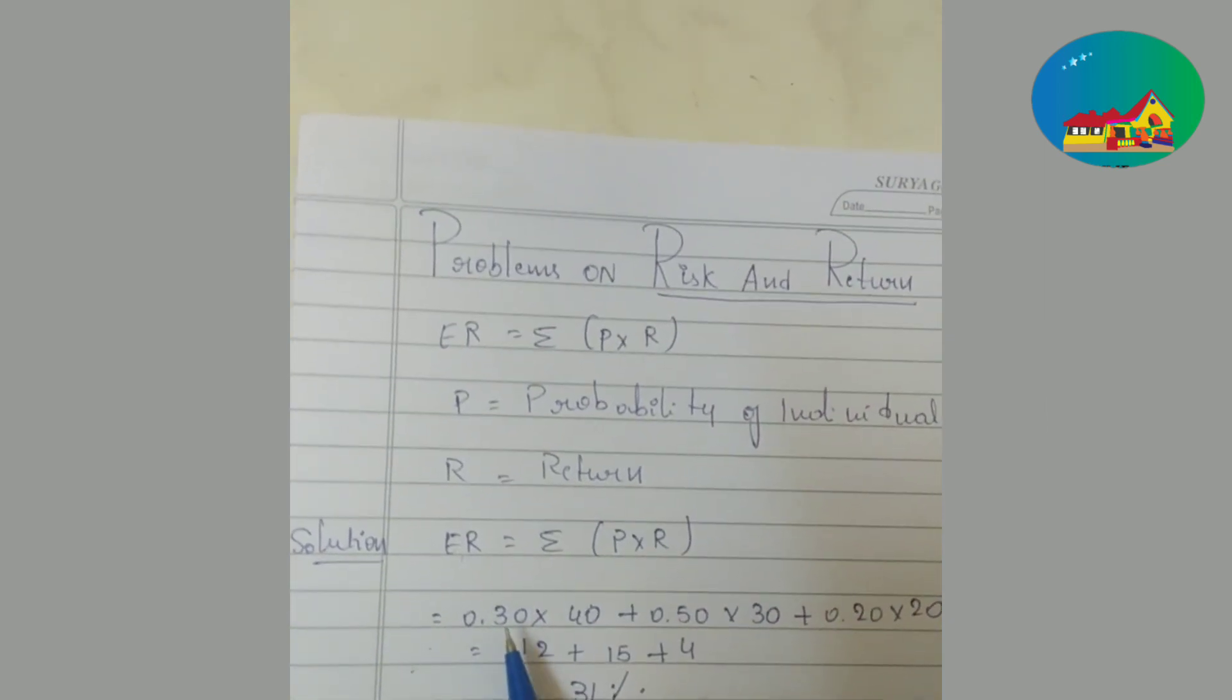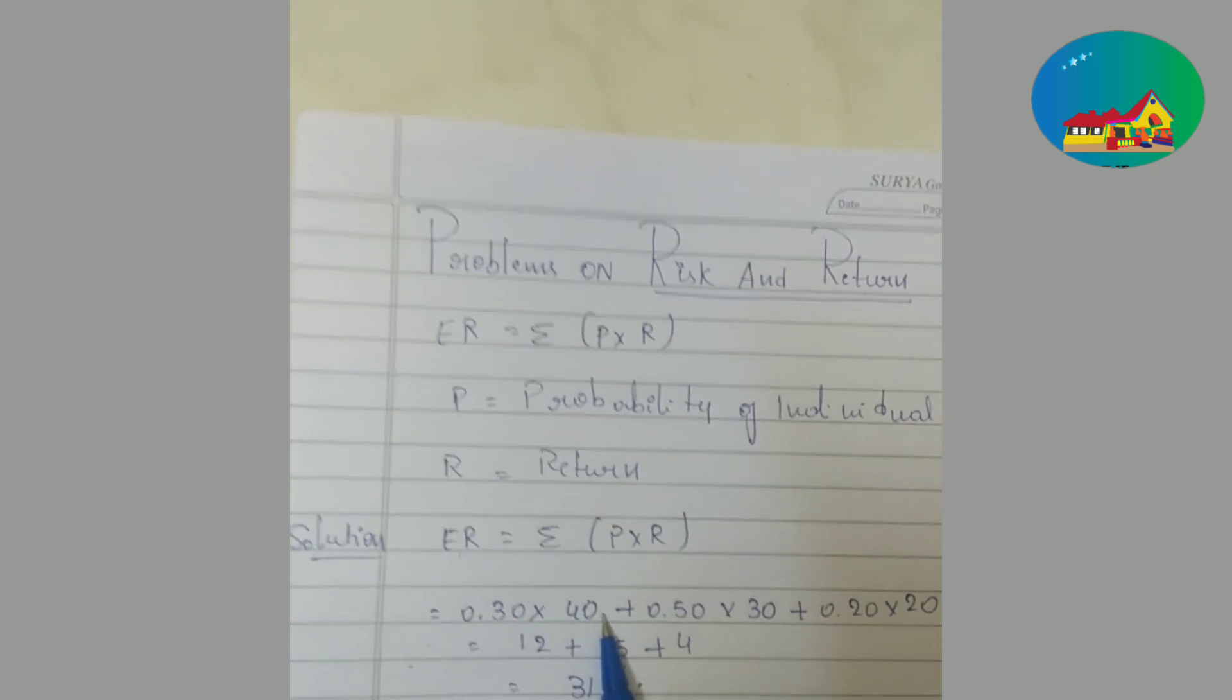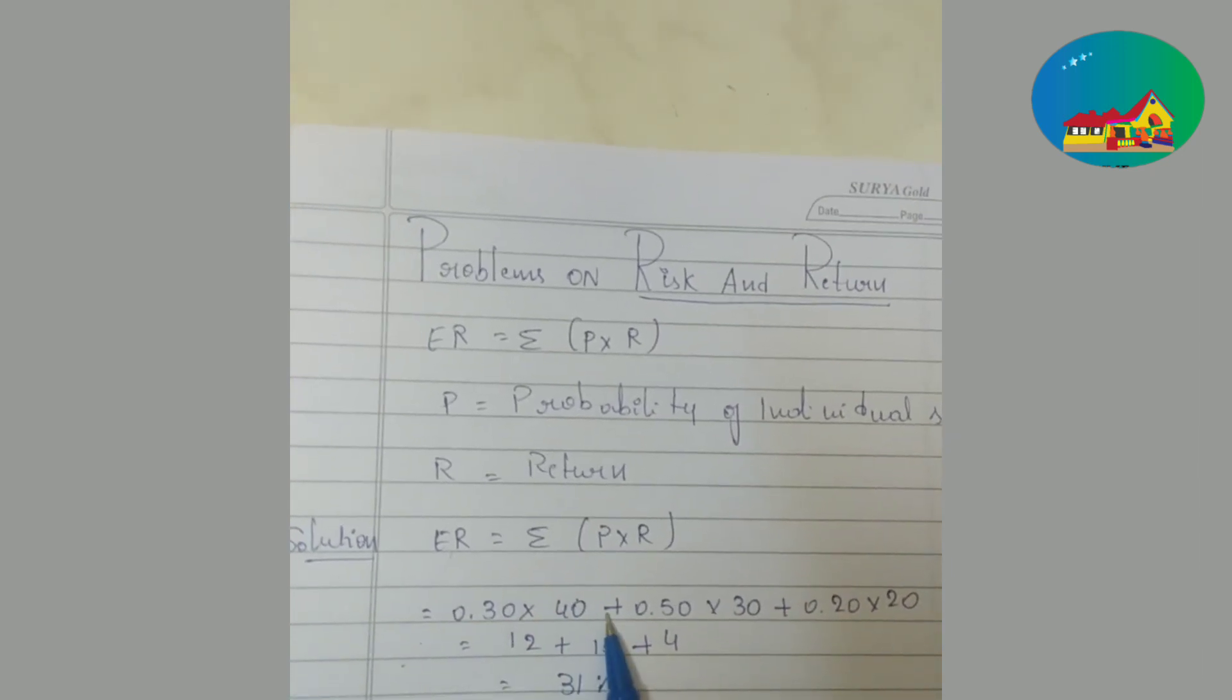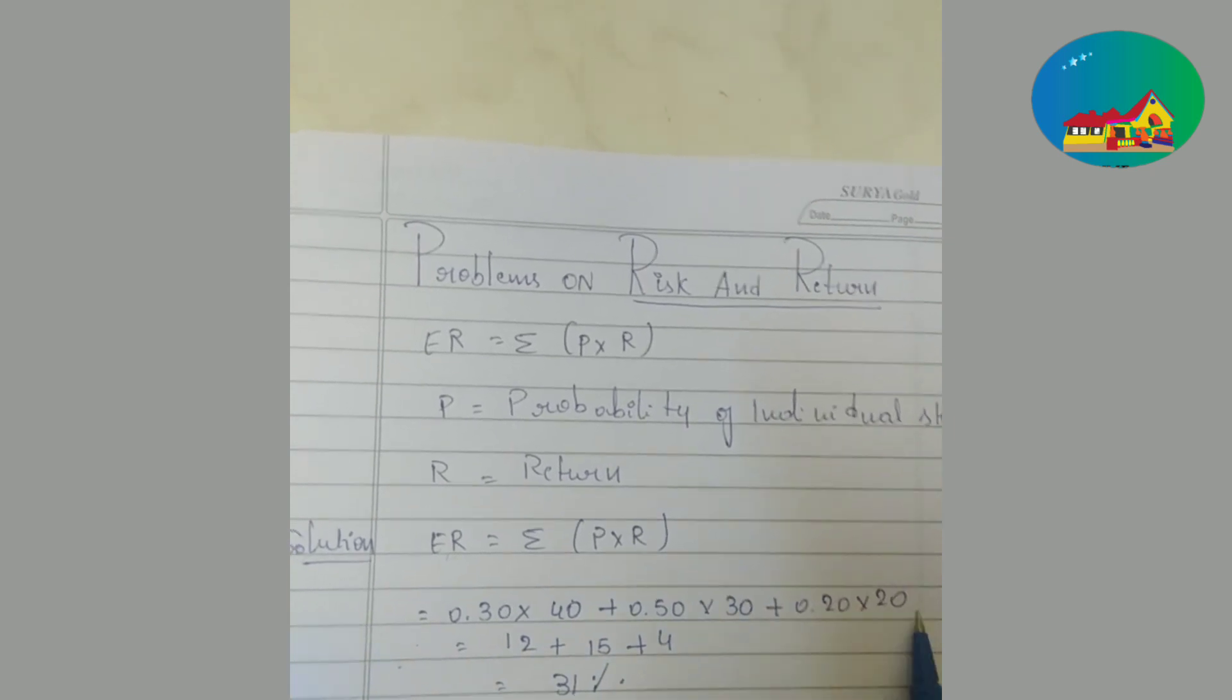We have considered probability of occurrence into rate of return: 0.30 into 40, 0.50 into 30, 0.20 into 20.